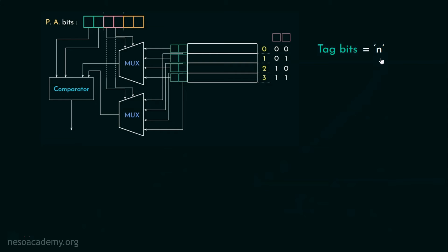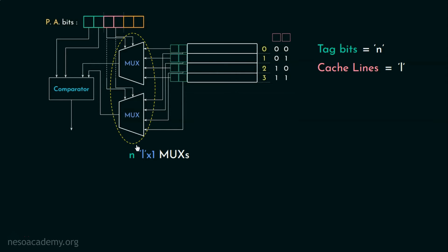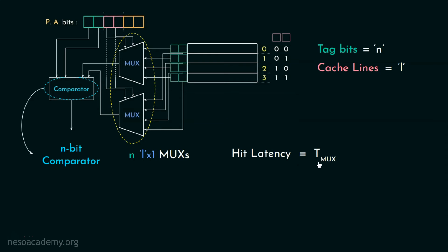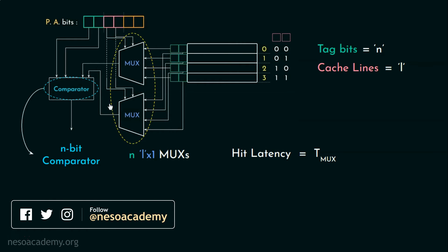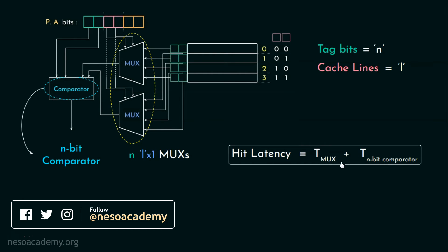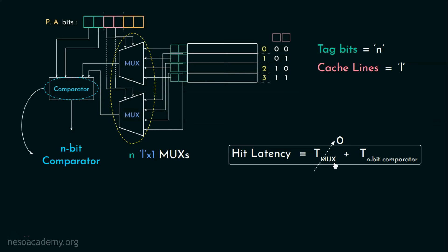So if there are N tag bits and L lines in the cache, N L-to-1 multiplexers will be used working in parallel, and a single N-bit comparator will be needed. Therefore, the hit latency is the time taken by 1 multiplexer — only 1 because all N multiplexers work simultaneously — plus the time taken by the N-bit comparator. In numerical problems, the multiplexer delay is generally neglected as the time taken by the N-bit comparator is very large compared to the multiplexer.